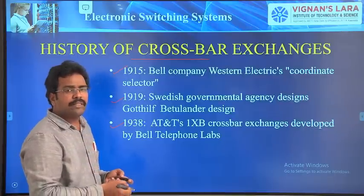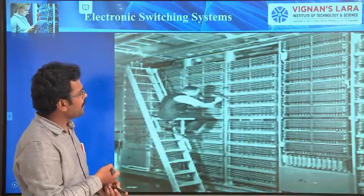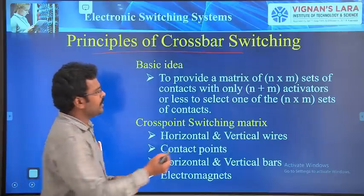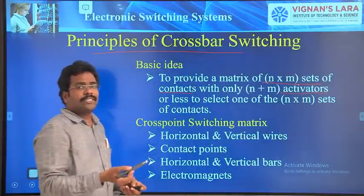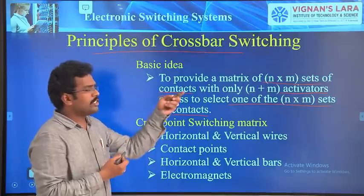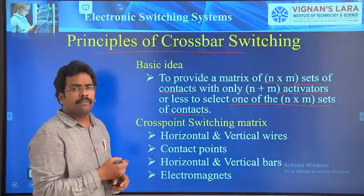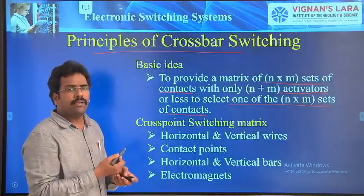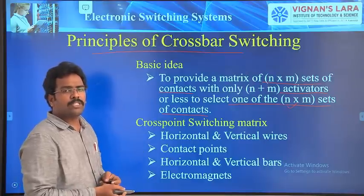Now I am going to explain a simple 3×3 switching matrix. This is a picture of a crossbar exchange. We will see the principles of crossbar switching system. The basic idea is to provide N×M sets of contacts with only N plus M activators to select one of the N×M sets of contacts. The objective is to provide a matrix which contains N×M sets of contacts with only N plus M activators or less, whether it is blocking or non-blocking, and with the help of that, select one of the N×M sets of contacts.